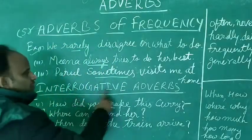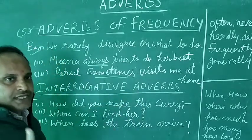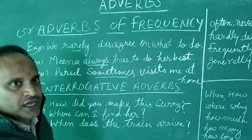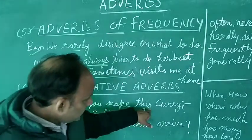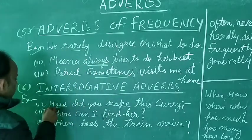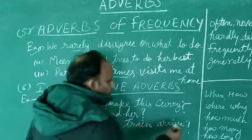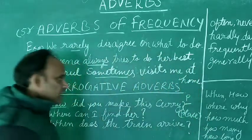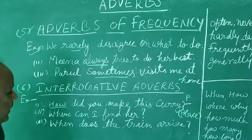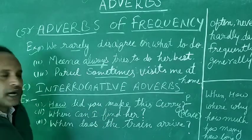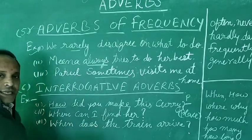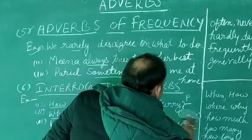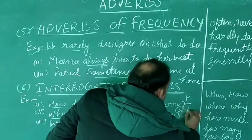Now let's look at examples of Interrogative Adverbs. For example: 'How do you make this curry?' Here 'how' is used, which is an Adverb of Manner — it tells us in which way the curry is made. Another example: 'Where can I find her?' This shows about place — so 'where' here is an Adverb of Place. And: 'When does the train arrive?' — this is about time.